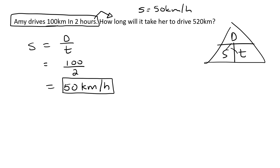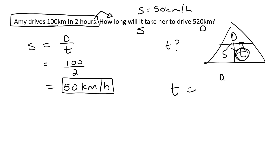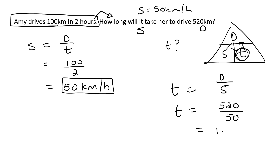So we now have the speed, and we've got the new distance of 520. With speed and distance, we can calculate time. Time equals distance over speed, so that's 520 divided by 50, which gives us 10.4. Since we've seen hours in this question, this is going to be 10.4 hours.